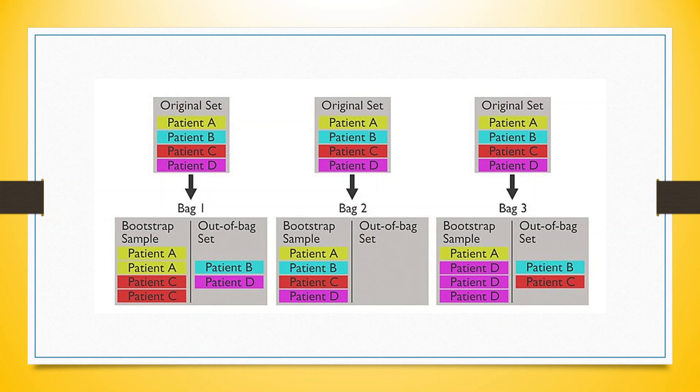You can see here bag 1, bag 2, and bag 3. When we consider patients B and D in bag 1, this is an out-of-bag set prediction. Bag 2 consists of patients A, B, C, D and therefore there is no out-of-bag set. For bag 3, it contains patient A and patient D, meaning that predictions for patients B and C are known as out-of-bag predictions.